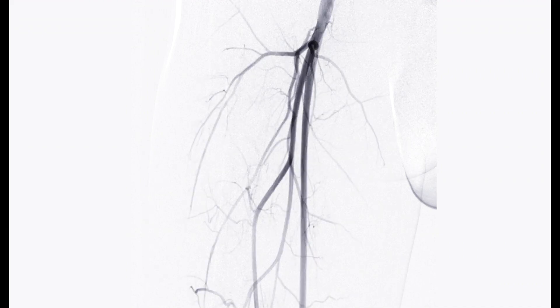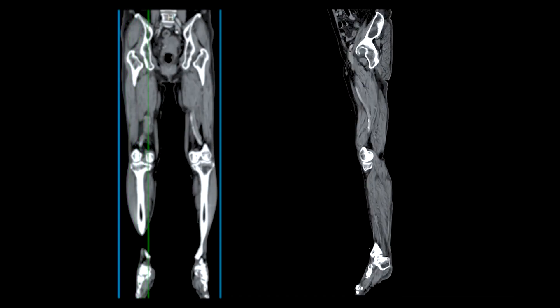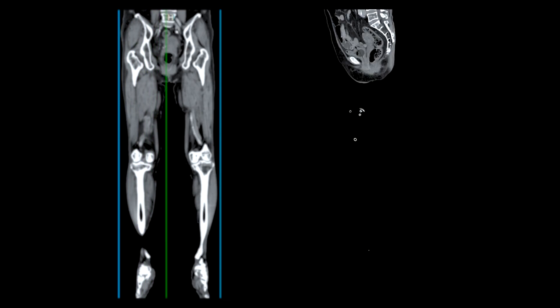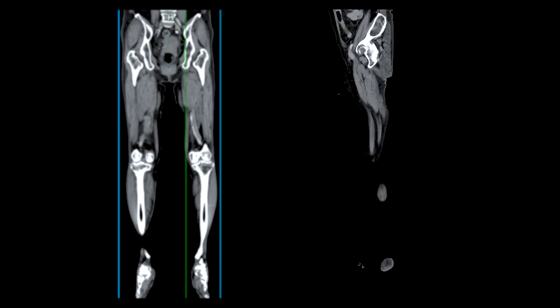The procedure starts with an angiogram, which involves injecting a special dye into the blood vessels of the affected area. This dye makes the blood vessels visible on x-ray images, allowing the doctor to see any blockages, narrowing, or other abnormalities.